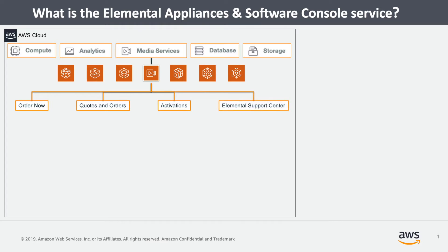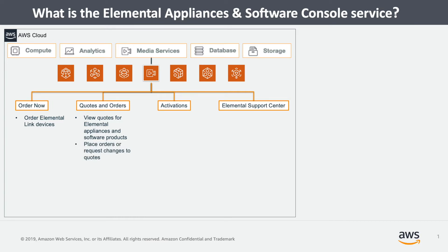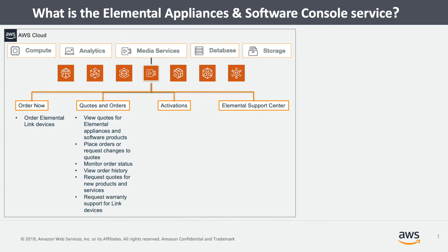Let's take a look into each. With OrderNow, you can self-serve place orders for Elemental linked devices. Under Quotes and Orders, you can view quotes issued by your Account Manager for Elemental Appliances and Software products. You can place orders including uploading your purchase order, or you can request changes to quotes. You can monitor your current order status and view your complete order history, and you can request quotes for new products and services. You can also request warranty support for any linked devices you've purchased.